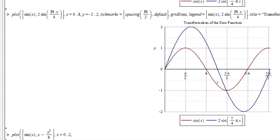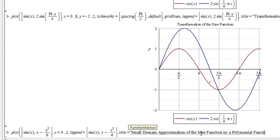We're going to give it a small domain, so from 0 to 2, because this tends to only work in small domains, and let's give it a legend. So legend equals, and we give it both functions that we are passing to it, and we'll give it a title, small domain approximation of the sine function by a polynomial function.